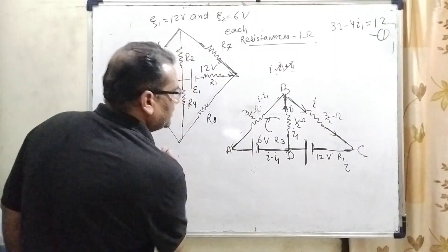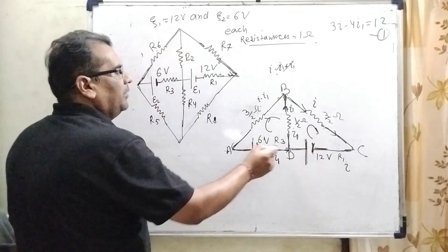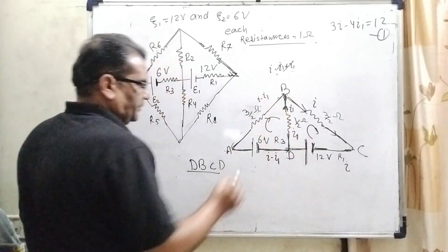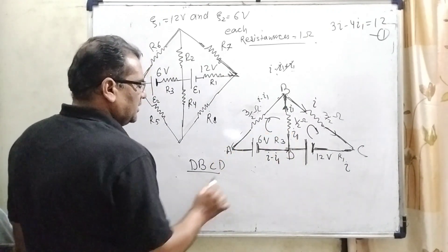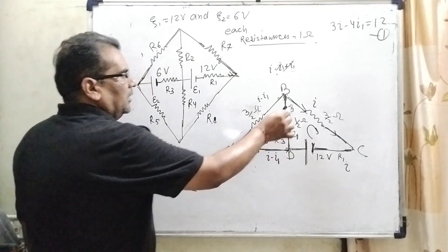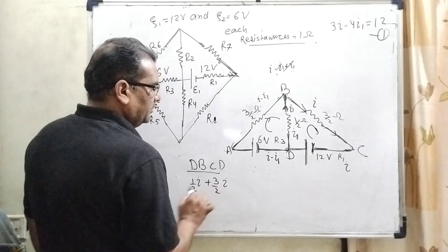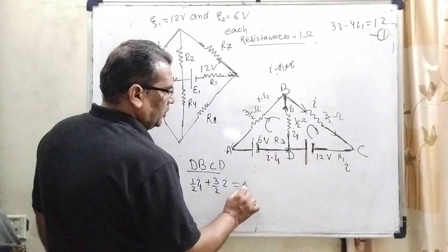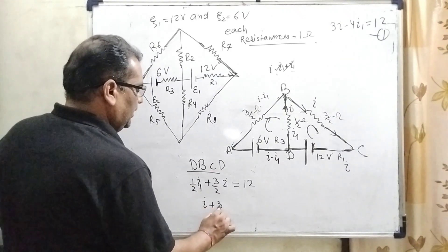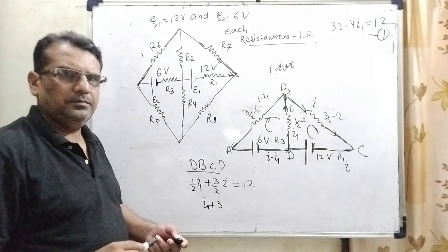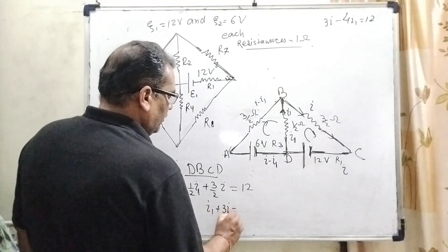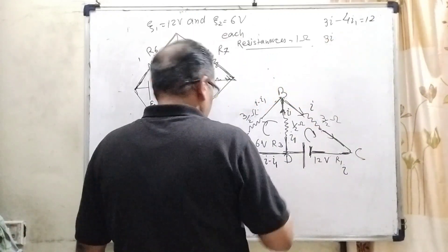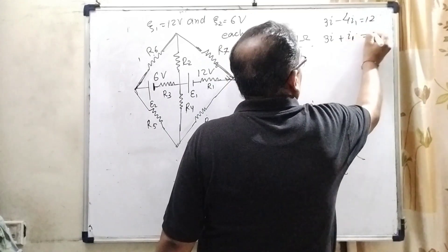Now checking another loop. Here, we go from D to C to D. Here, I1 current and the resistance is 1/2, so 1/2 I1. Here, 3/2 I equals the 12 volt battery. So 1/2 I1 plus 3/2 I equals 12. Multiplying through: I1 plus 3I equals 24. This is the second equation.